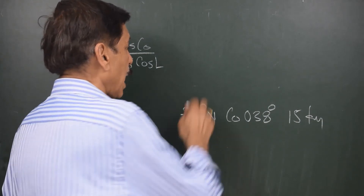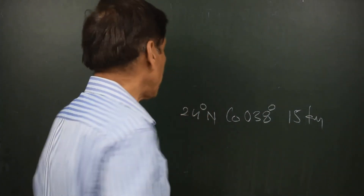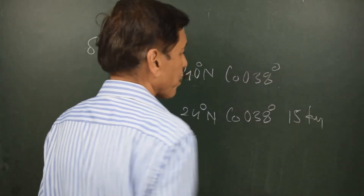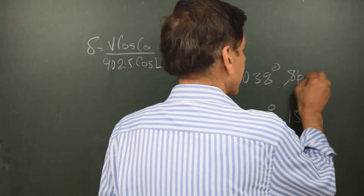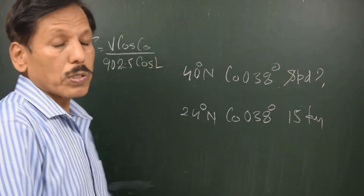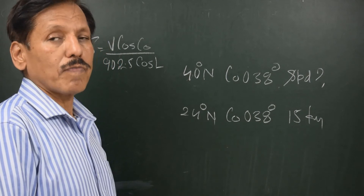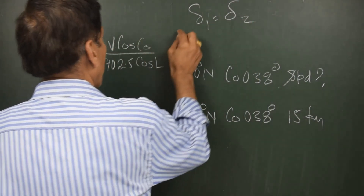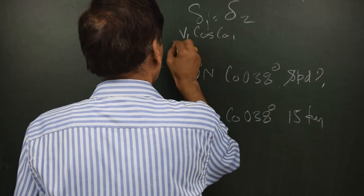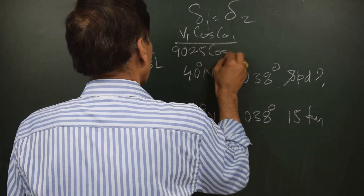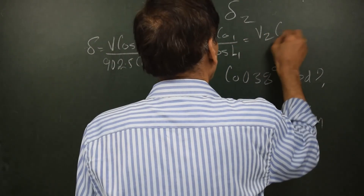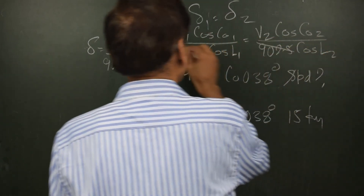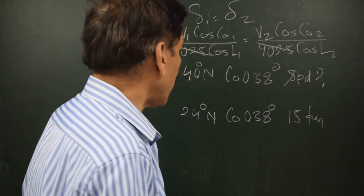There is another ship with an identical gyro damped in azimuth at latitude 40 degrees north. That ship is also steering a course of 038 degrees. The question is: what is its speed? The condition given is that both gyros are exhibiting the same amount of north-south speed error. So delta1 = delta2, meaning V1 cos(course1) / 902.5 cos(L1) = V2 cos(course2) / 902.5 cos(L2). The 902.5 cancels.